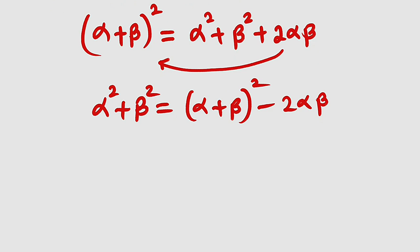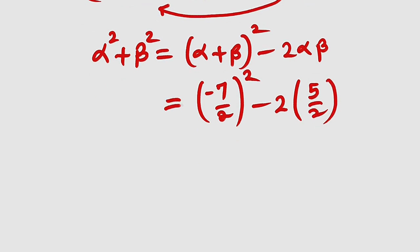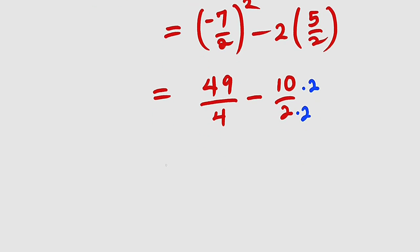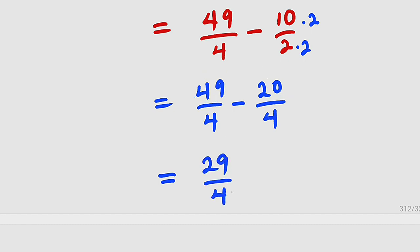Now we back substitute using only the sum and the product. The sum is negative 7 divided by 2, but because of the power of 2 we have to square that. Then minus 2 multiplied by the product, which is 5 over 2. Negative 7 squared is 49 divided by 2 squared is 4, minus 2 times 5 is 10 divided by 2. To get common denominators, we get 49 divided by 4 minus 20 divided by 4, which gives us 29 divided by 4. Hence, alpha squared plus beta squared equals 29 divided by 4.